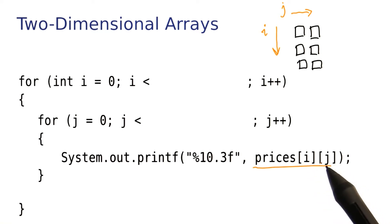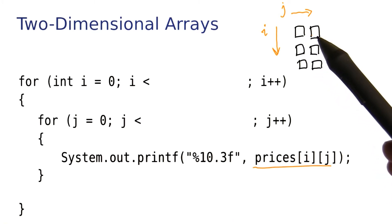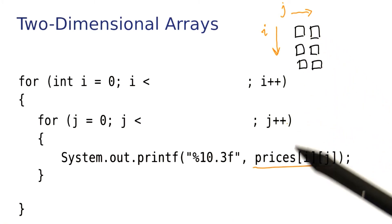In this case, we just print it, and we use printf so that the printout lines up nicely. So we would now print this element, and then print that element, and that would finish the inner loop.